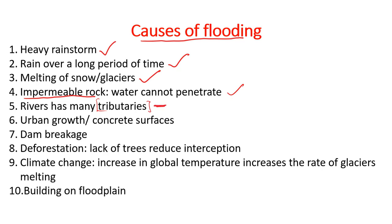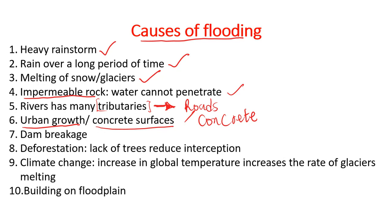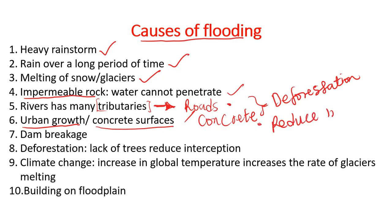When rivers have many tributaries joining the main course, you can expect flooding in the lower part of the river. Urban growth leads to building of roads and concrete surfaces. Combined with deforestation, these concrete surfaces and roads reduce infiltration, and all of them together can lead to flooding.